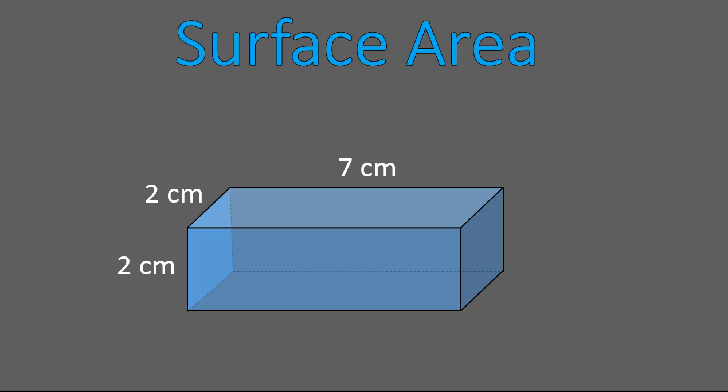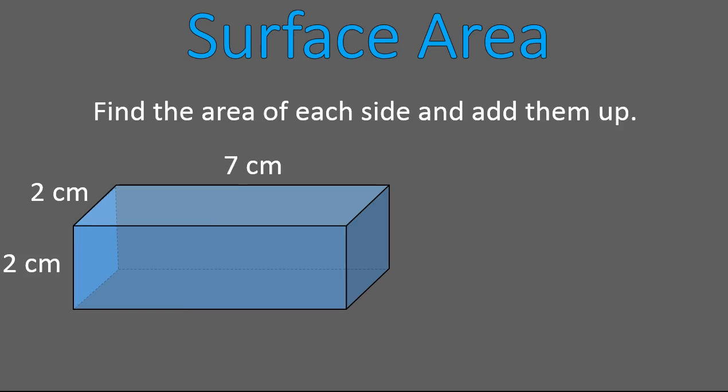Our last part is surface area. Surface area is kind of like picturing this three-dimensional solid as a chunk of wood, and you need to paint it. And you're asking yourself, how much paint would it take to cover all sides of this solid? So I'm going to do this. I am going to find the area of each side and then add them all up.